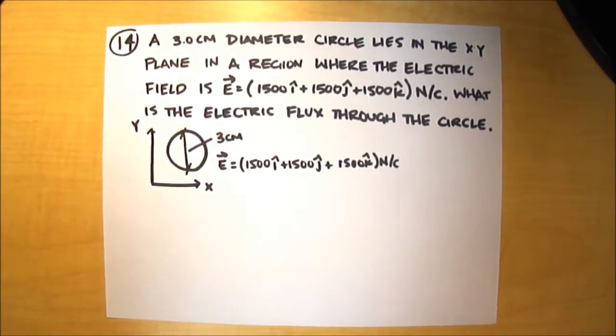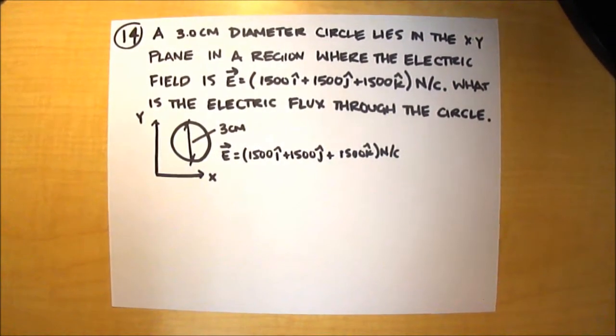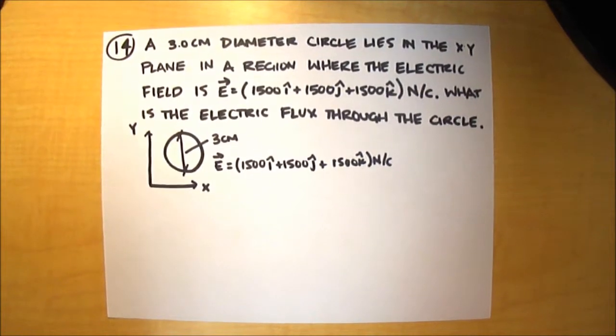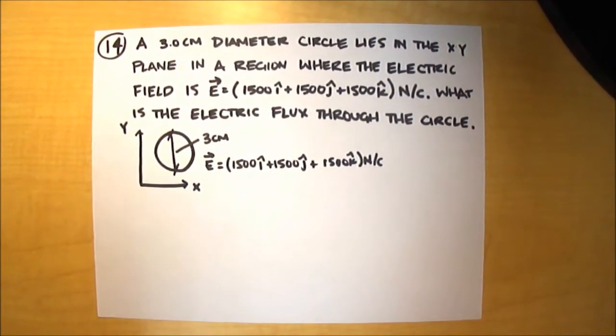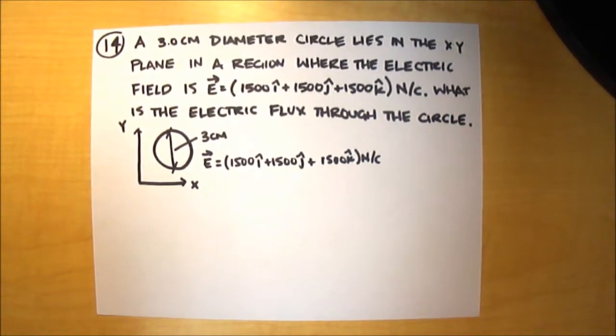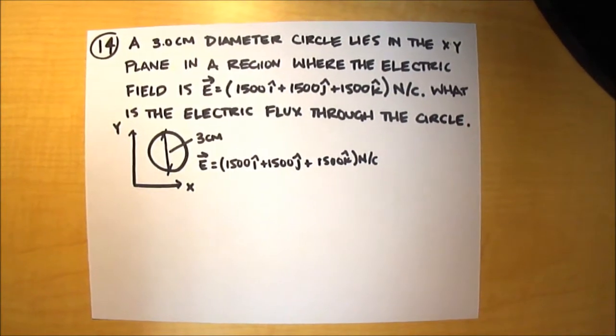So our question is, a 3 centimeter diameter circle lies in the xy plane in a region where the electric field is 1500i plus 1500j plus 1500k newtons per coulomb. What is the electric flux through the circle?